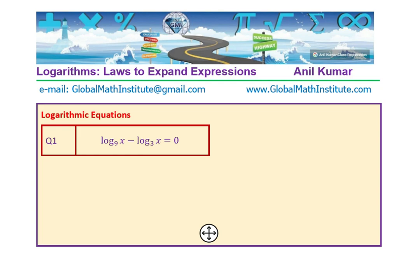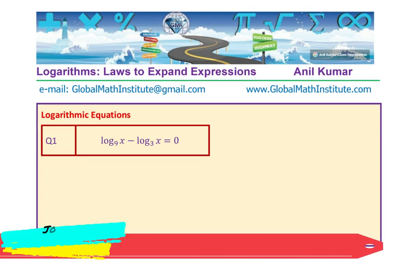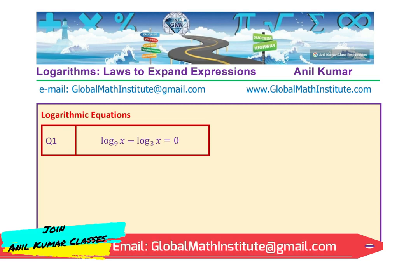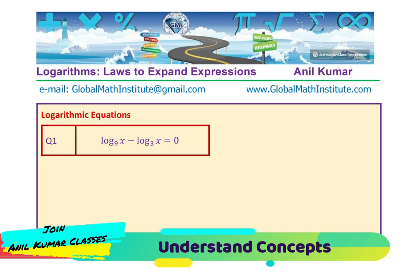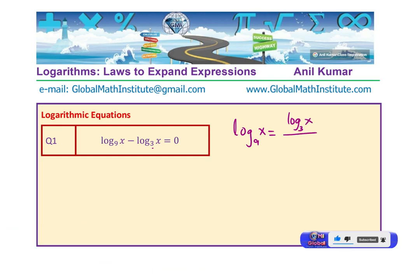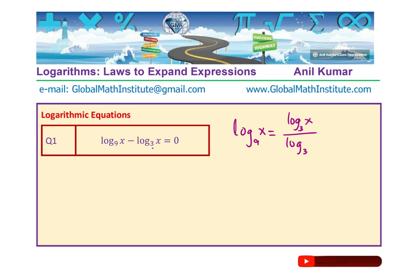I would like you to try and solve this equation and then check with my solution. The equation is log to the base 9 of x minus log to the base 3 of x equals 0. Since the base is different, we cannot simply combine them. Using the change of base formula, we rewrite log base 9 of x as log base 3 of x divided by log base 3 of 9.